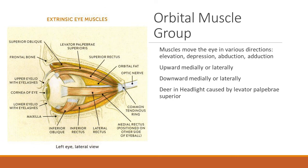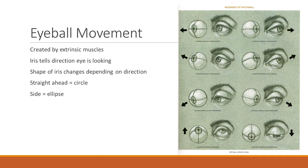The levator palpebrae superioris causes the upper eyelid to move upward, opening the eyes wide and giving you that deer-in-headlights look. Eyeball movement is extremely important not just in animations but also in video game characters. Now that we have fairly high-resolution characters, we can have intricate eye movements, getting better every year as hardware and software allow. Eyeball movement is created by extrinsic muscles, and the iris tells the direction the eye is looking.